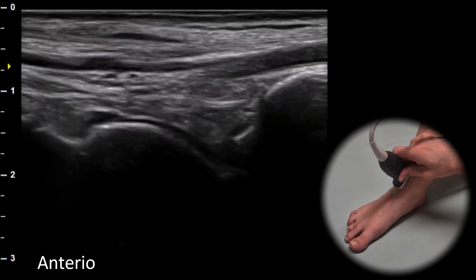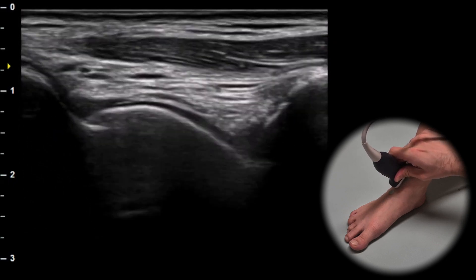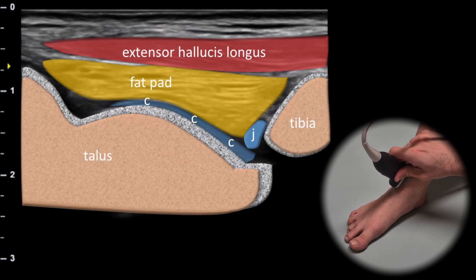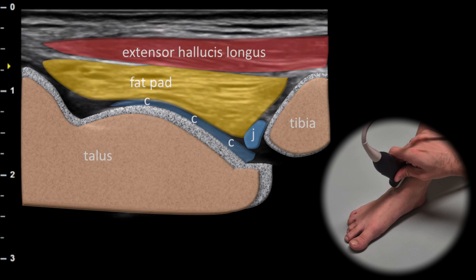When we rotate the probe 90 degrees into the longitudinal plane, we can assess the tibiotalar joint. In this view the tibia, talus, talar cartilage and fat pad are visible. This area is a potential space where joint fluid may accumulate.